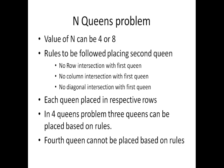For the second queen, we consider no row, column, or diagonal intersection with the first queen. For the third queen, we consider the same constraints with both the second and the first queen, and we follow the same for all subsequent levels. If we are unable to place a queen, we go one step backward.